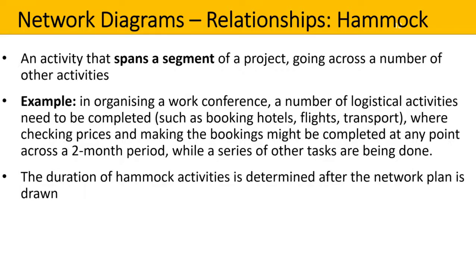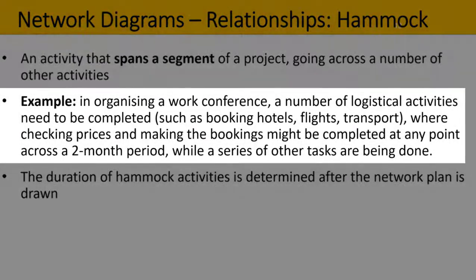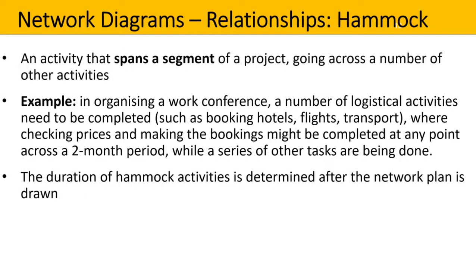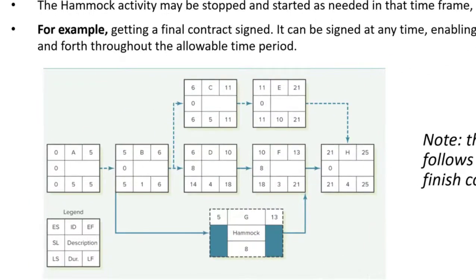Here is another type of relationship called a hammock. This is an activity that spans a segment of the project, going across a number of other activities. For example, in organising a work conference, a number of logistical activities need to be completed, such as booking hotels, flights and transport, where checking prices and making the bookings might be completed at any point across a two-month period while a series of other tasks are being done. The duration of hammock activities is determined after the network plan is drawn. The hammock activity G needs to be done between week 5 and week 13, and it's tied to activities B, D and F.